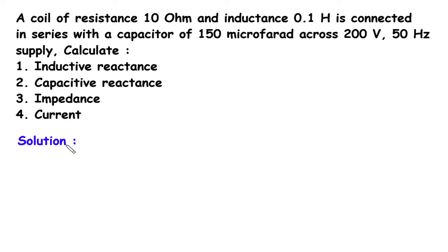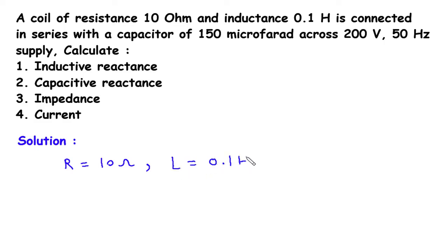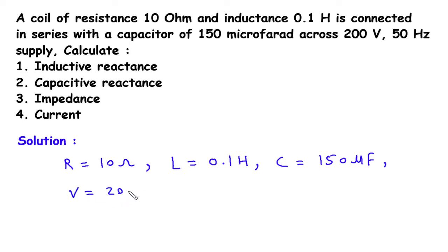Solution. First of all we will write what is given. Resistance R is equal to 10 Ohm. Inductance L is equal to 0.1 Henry. Capacitance C is equal to 150 microfarad. Voltage V is equal to 200 volt. Frequency F is equal to 50 hertz.